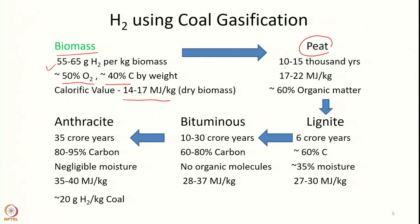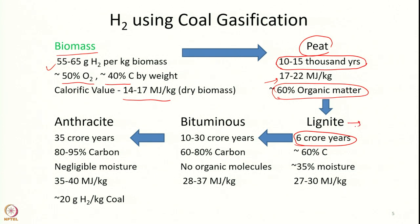When we look into peat, which has stayed inside the Earth's crust for around 10 to 15,000 years, you still have around 60 percent organic matter left — showing how slow the process of coal formation from biomass is. There is a very small increment in calorific value. Then after 60 million years, what you get is lignite, which now has a higher amount of carbon; a lot of oxygen has left as moisture. The calorific value almost doubles — from 14 to 17 megajoules in biomass to almost double that now.